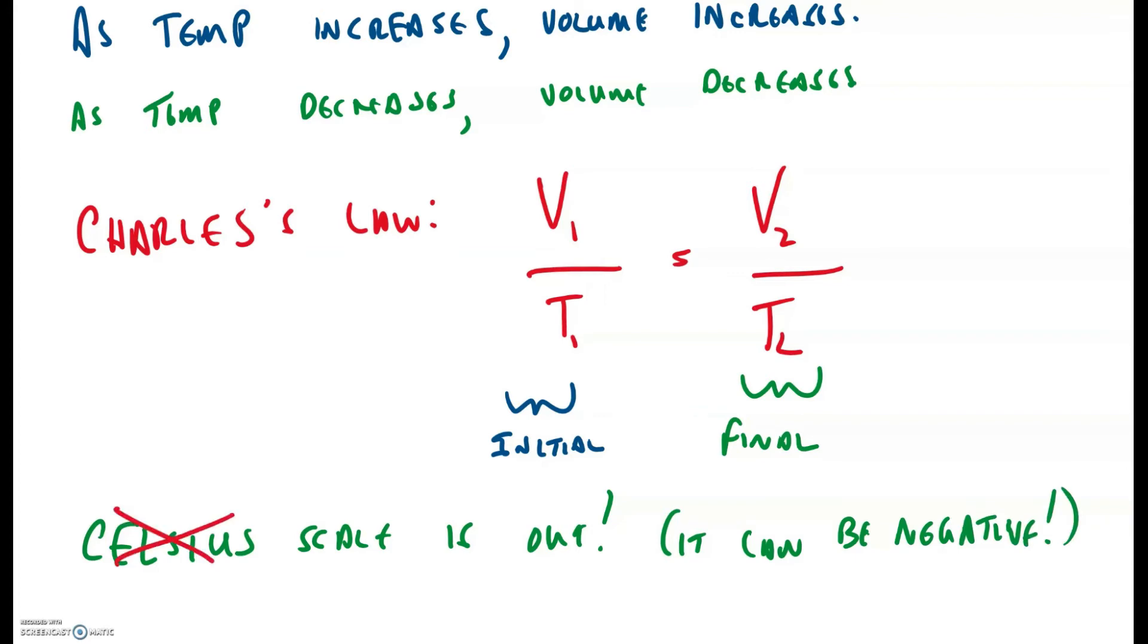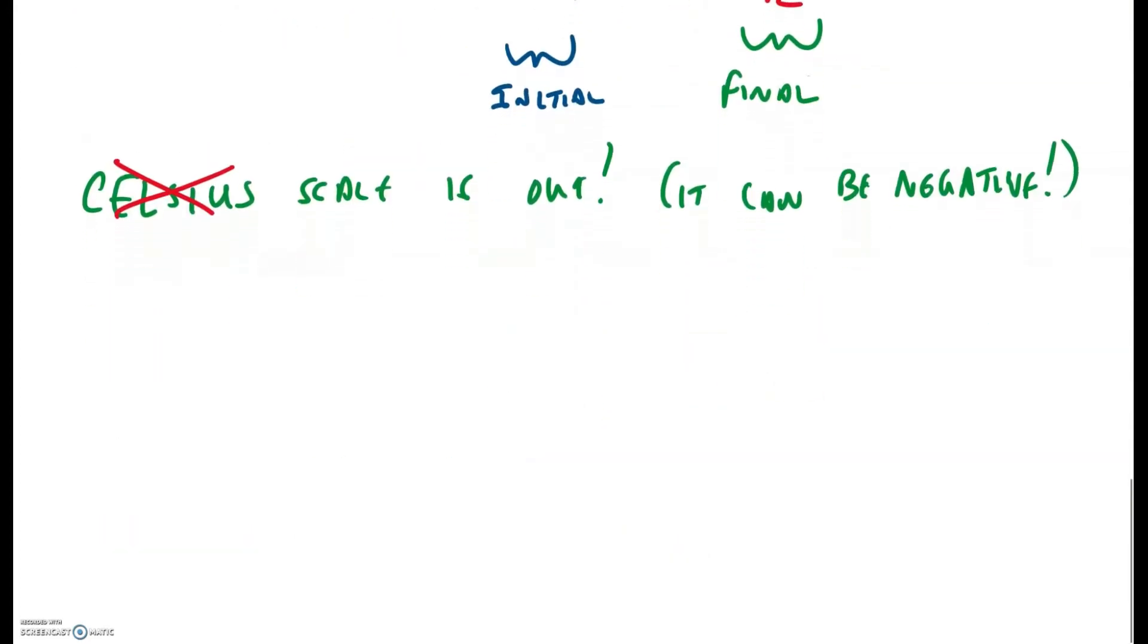We are going to use a new scale. We're going to use what's called the Kelvin scale. This is an interesting scale because if we take zero Kelvins, we don't even say zero degrees Kelvin, we say zero Kelvins. This is called absolute zero.